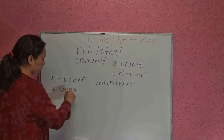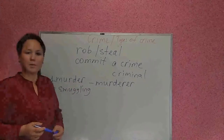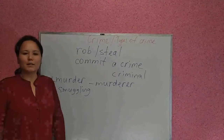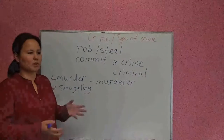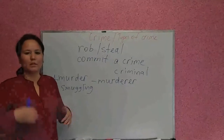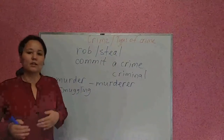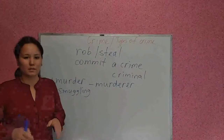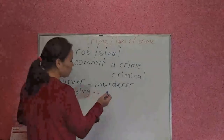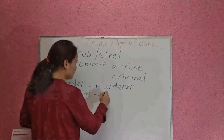Number two: smuggling. Smuggling is taking some objects — some things, some personal belongings, some valuable things — from one country to another country illegally, with no permission. This is called smuggling, and the person who commits this crime is called a smuggler.